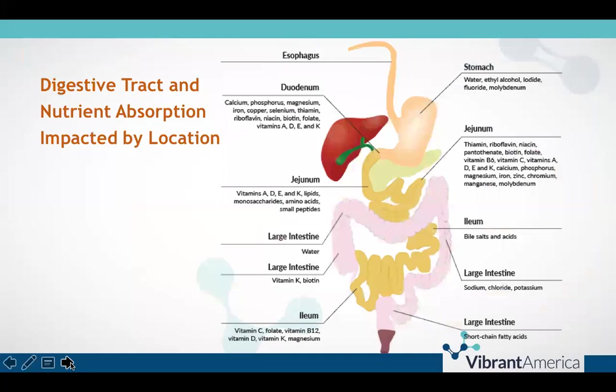This is a diagram of the entire gastrointestinal tract and sites of nutrient absorption, so that you can see depending on the location of inflammation in the digestive tract, you may be looking at multiple types of nutrient malabsorption. Despite your patient eating enough of a nutrient, they can still be malabsorbing simply because the intestinal lining is inflamed and dysfunctional. If you're not already running Vibrant micronutrient testing alongside the Wheat Zoomer, this may help demonstrate why those two tests complement each other very well.